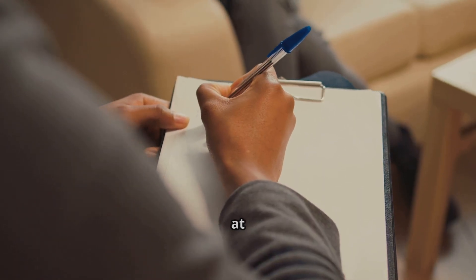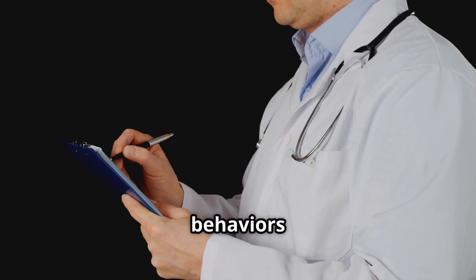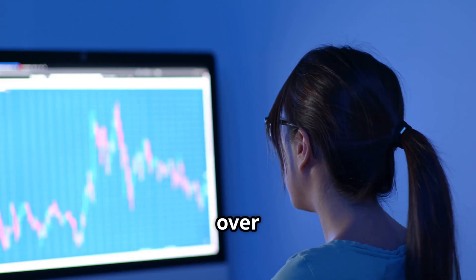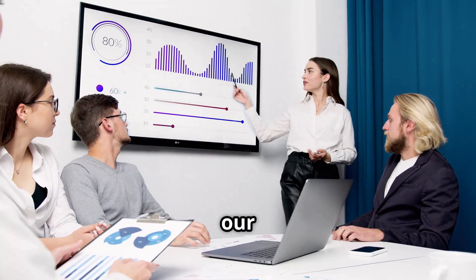Measurable change is at the heart of ABA. We carefully measure the behaviors we are working on. We use graphs and charts to track progress over time. The data provides the answers and guides our decisions.